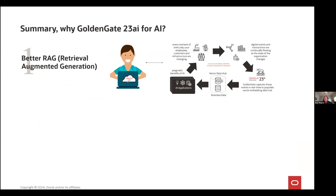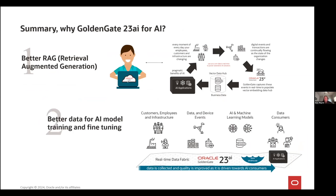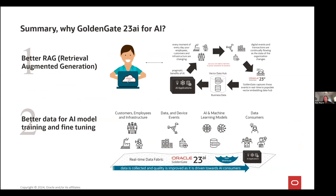To summarize why Golden Gate is good for AI: first, it improves your retrieval augmented generation by getting real-time data in there. Second, it helps tune your models and present the correct model to data consumers. Because Golden Gate can replicate data to different systems, you can run different models on different databases, and once you find the right model and dimensions, easily switch that database into production using traditional Golden Gate replication.